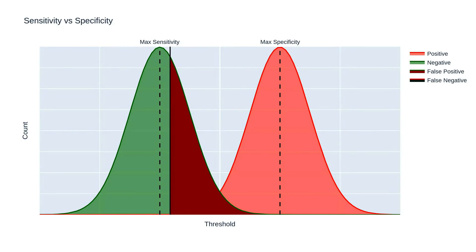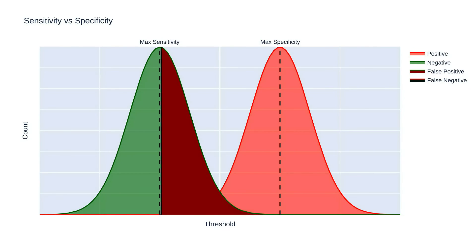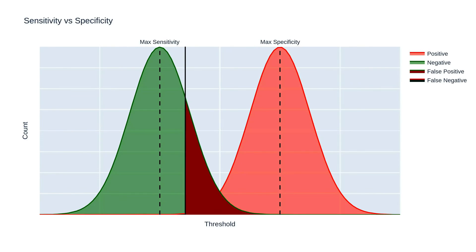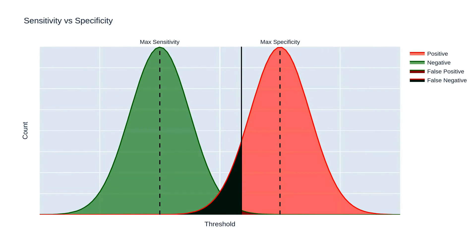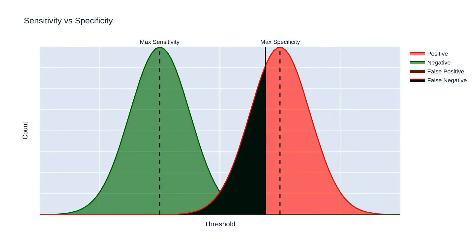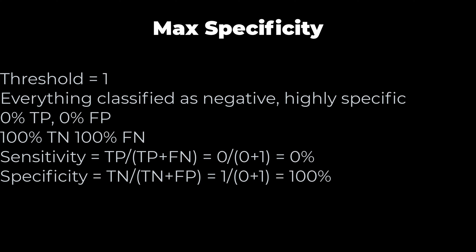Decreasing the threshold — moving it to the left — increases the rate of true positives, but at the cost of more false positives. We are tuning the model to be more sensitive. Eventually we reach max sensitivity where sensitivity is 100%, meaning we correctly classify every positive case, but every negative case is incorrectly classified as positive. We have sacrificed specificity for sensitivity. Conversely, increasing the threshold increases the rate of true negatives but at the cost of more false negatives. At max specificity, every negative is correctly classified but every positive is incorrectly classified — we have sacrificed sensitivity for specificity.